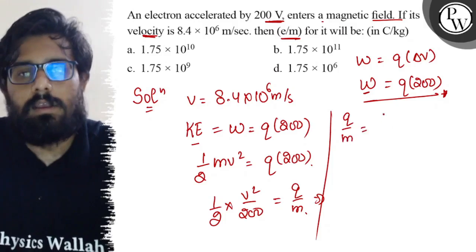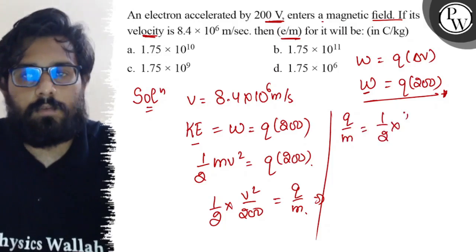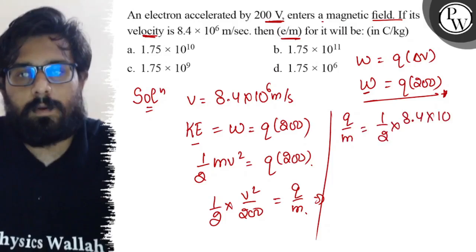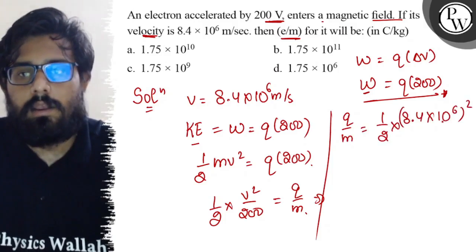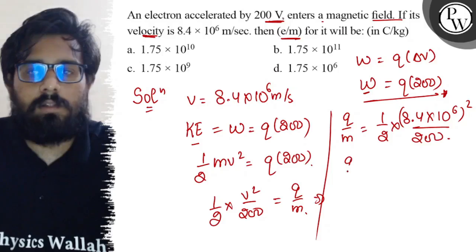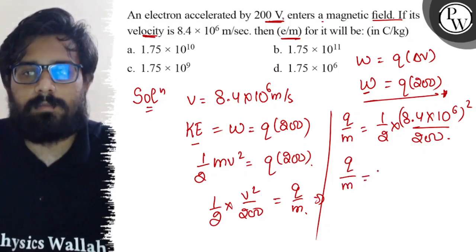From here, the value of q/m can be written as half times v², where v is 8.4 × 10⁶, the whole square divided by 200.